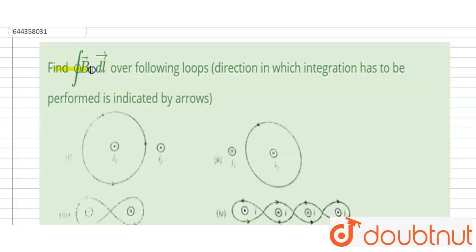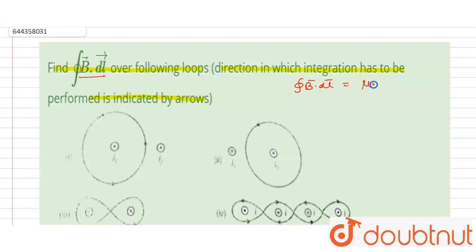The question is: find ∮B·dl over the following loops. The direction in which integration has to be performed is indicated by the arrow. This is Ampere's Law: ∮B·dl = μ₀ × i_enclosed.